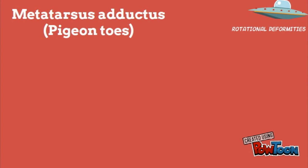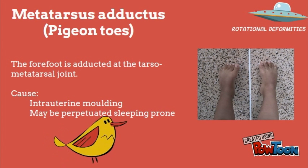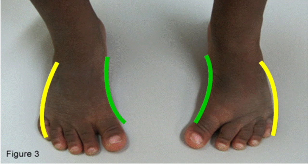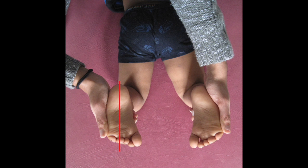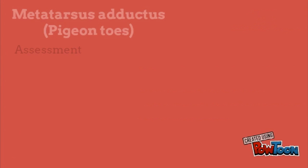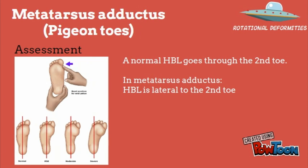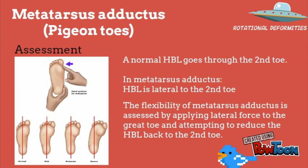In metatarsus adductus, the forefoot is adducted at the tarsometatarsal joint. It may be caused by intrauterine moulding and may be perpetuated by sleeping prone. On examination of the foot, the sole has a convex lateral border and a concave medial side which is passively correctable, and the hindfoot is normal or in slight valgus. To measure the heel bisector line, flex the knee to 90 degrees and dorsiflex the ankle so that the plantar surface is parallel to the ceiling. Approximate a visual line parallel to the heel and extend distally to the toes. A normal heel bisector line goes through the second toe; metatarsus adductus is diagnosed when the heel bisector line is lateral to the second toe. Flexibility should also be assessed by applying lateral force to the great toe and attempting to reduce the heel bisector line back to the second toe.